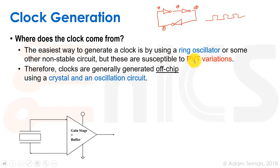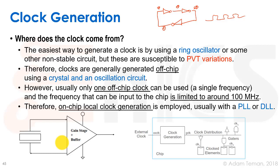It's susceptible to process voltage and temperature variations, and we want some sort of frequency that we know about because we have to meet our setup and hold delays and spec. Therefore, clocks are generally generated off-chip using a crystal and some sort of oscillation circuit. That's because crystals can make a very nice and stable frequency.